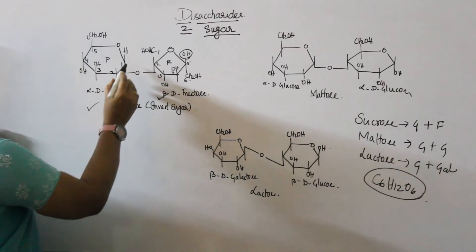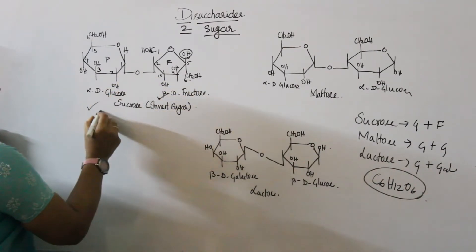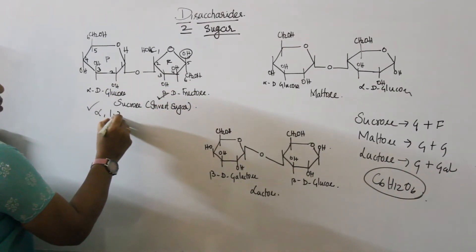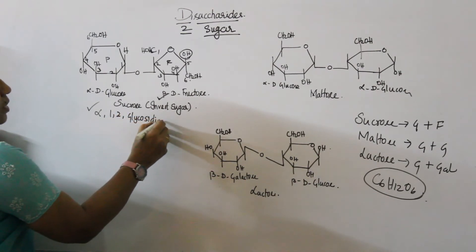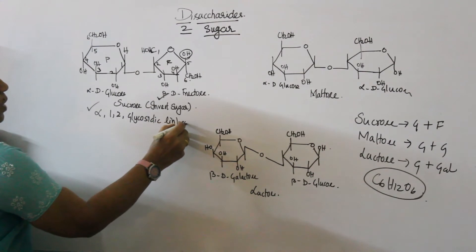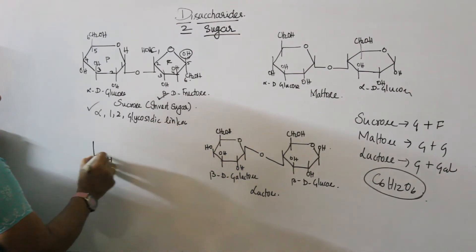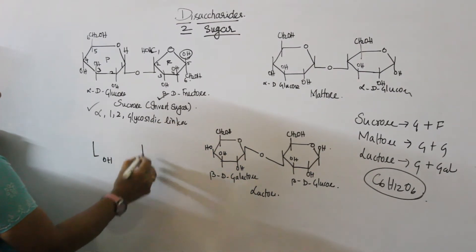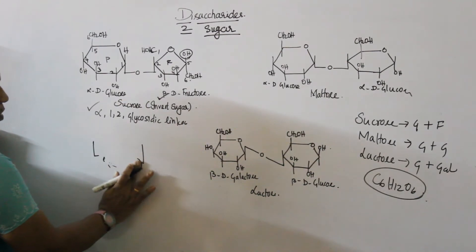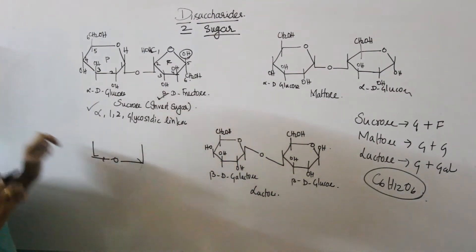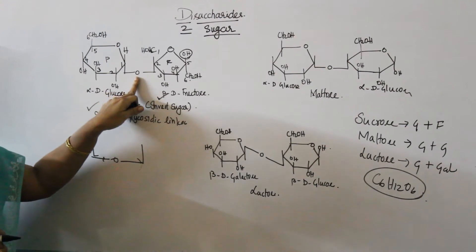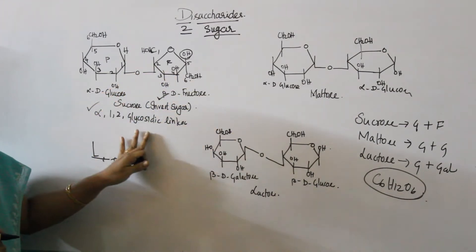Here it is alpha, 1, 2 glycosidic linkage. The glycosidic linkage is in the middle. One OH and one OH - from these two OH groups, one molecule of water is removed. You have an oxygen remaining, so the oxygen connects them. This is called a glycosidic bond. It's an alpha 1,2 glycosidic linkage in sucrose.